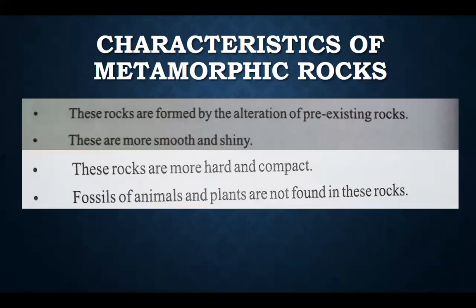In thermal metamorphism, what happens is that lava or magma causes the rocks to change their composition. And in regional metamorphism, the weight and pressure causes the rocks to change their formation. So these are the two metamorphic types. We also discussed the characteristics of metamorphic rocks. That is the end of today's topic.